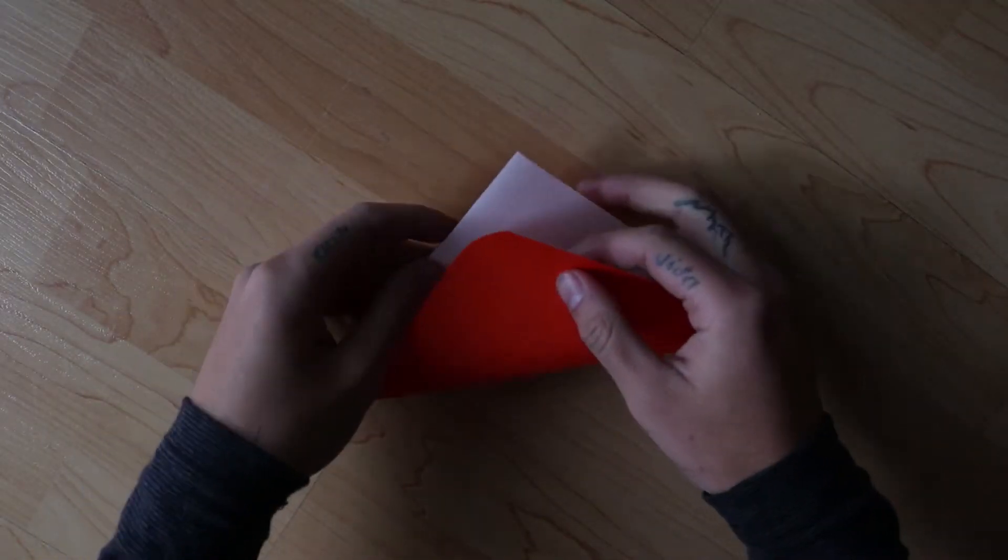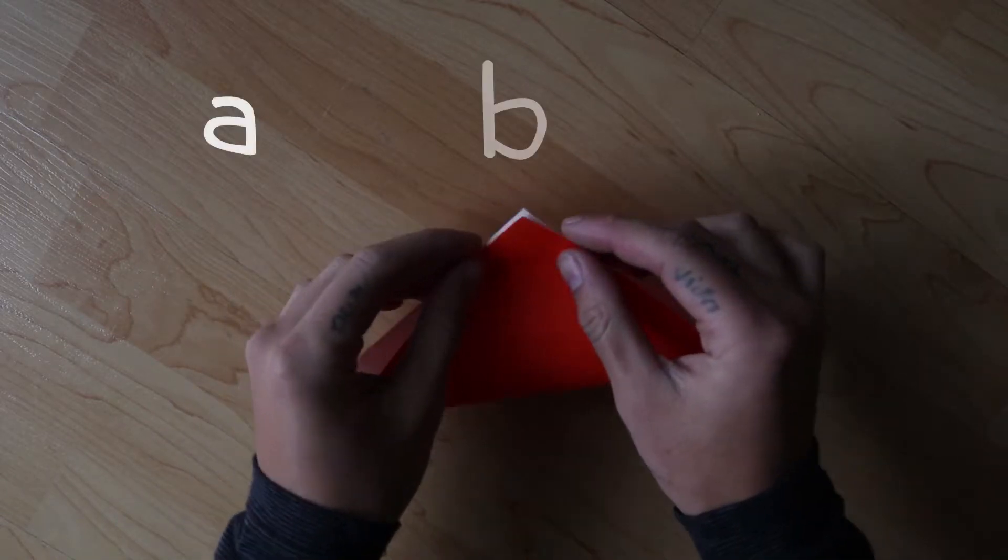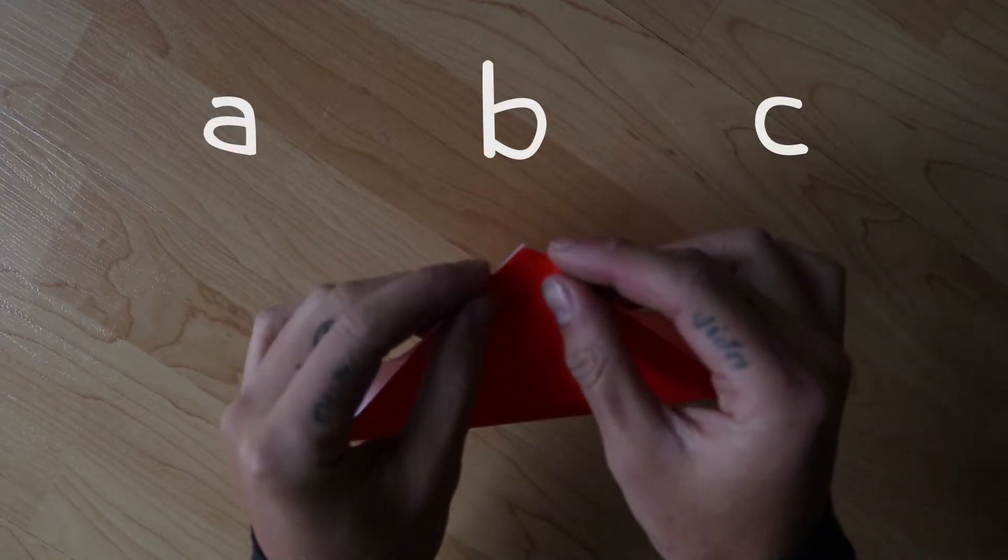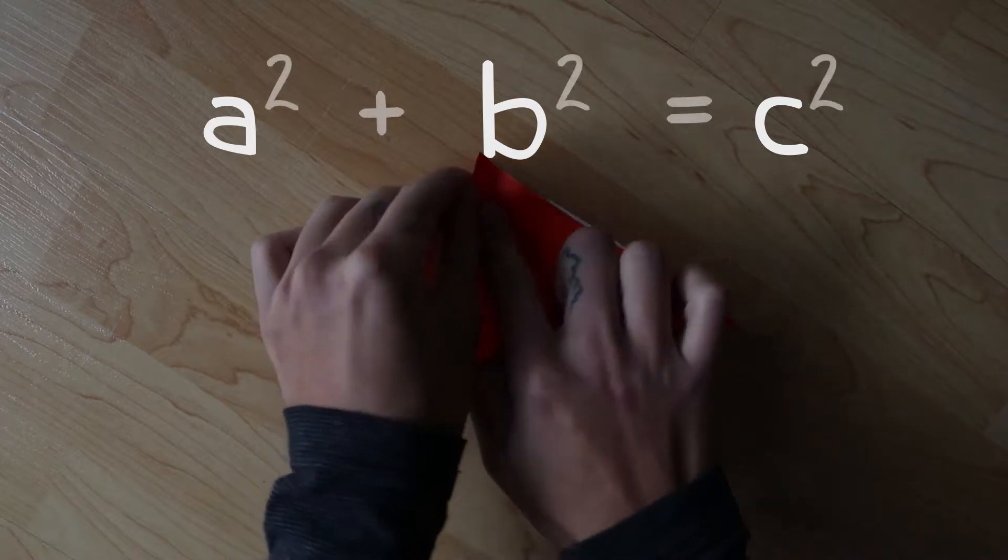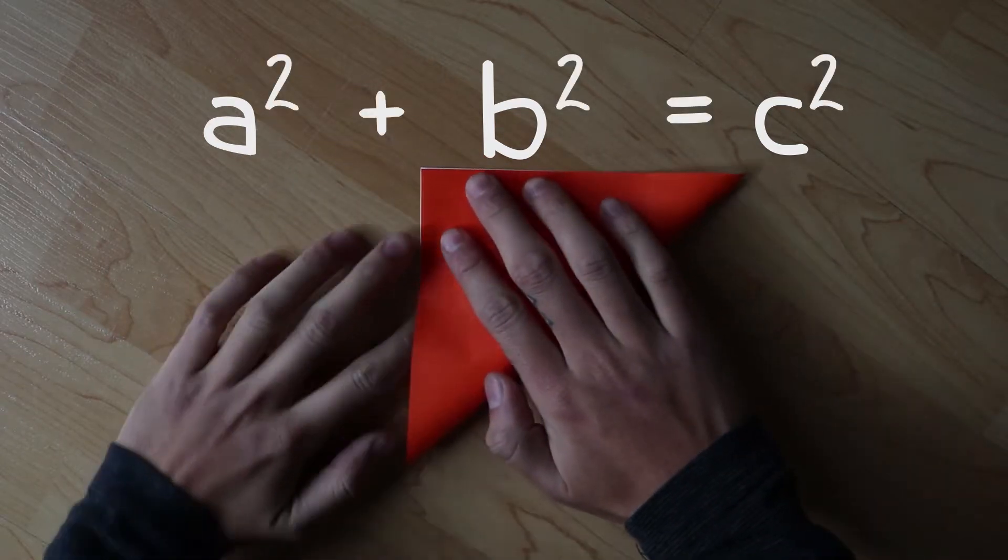For any right triangle with side lengths a, b, and c, where c is the longest side, a squared plus b squared equals c squared.